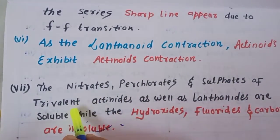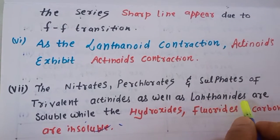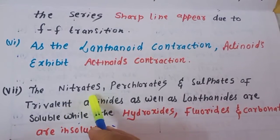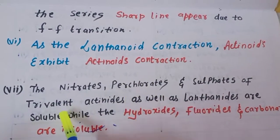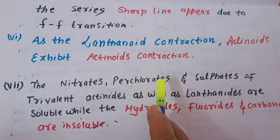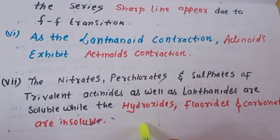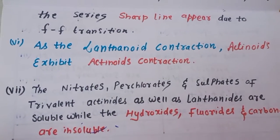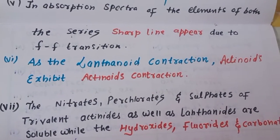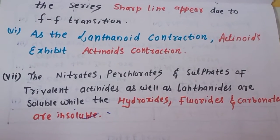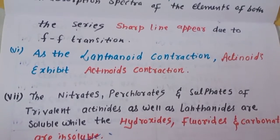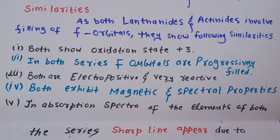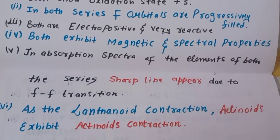Sixth point: the nitrates, perchlorates, and sulfates of trivalent lanthanides and actinides are soluble, since the +3 oxidation state is common to both. Seventh point: their hydroxides, fluorides, and carbonates are insoluble. These seven similarities are important — at least five should be memorized for exams.